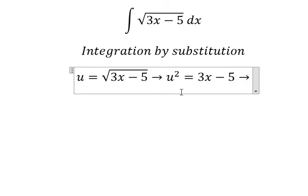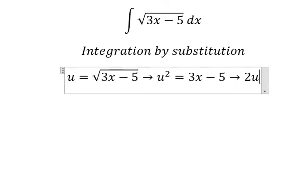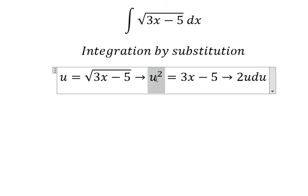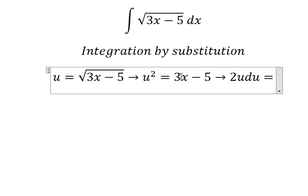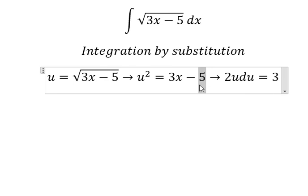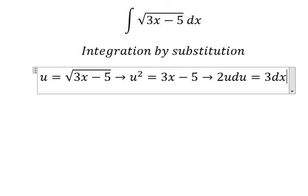Later we do first derivative for both sides. First derivative of u² we have 2u du. First derivative of x you got number 1, so we have number 3. First derivative of number 5, this is the constant, so you have number 0, and we put dx.